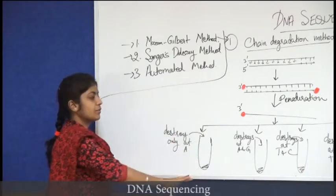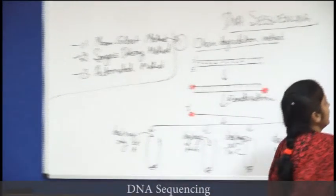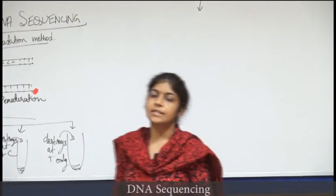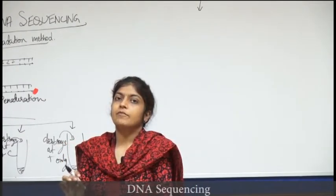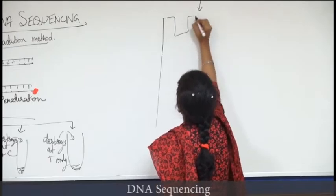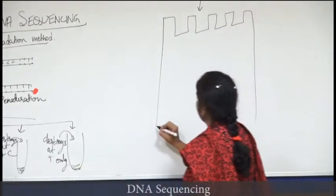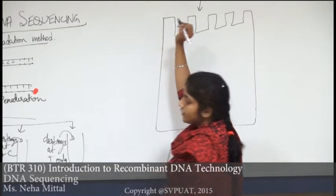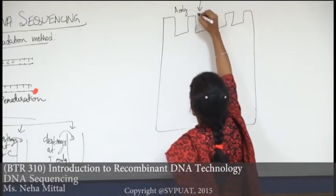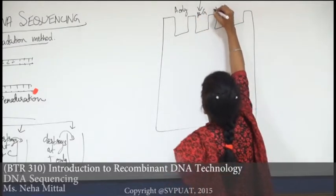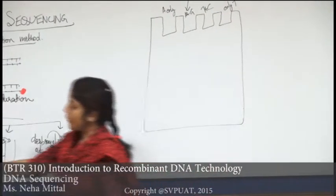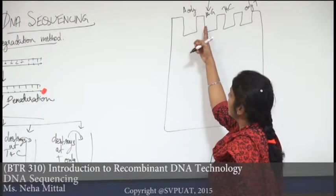After incubation of these chemicals with the DNA, we electrophorese the samples on sequencing gels, because these gels have very fine pores and have the capacity of differentiating even a single nucleotide. A gel is run where each lane contains the sample from each tube — the sample from the first tube is loaded in lane 1, the second in lane 2, and so on.